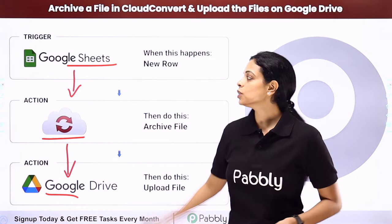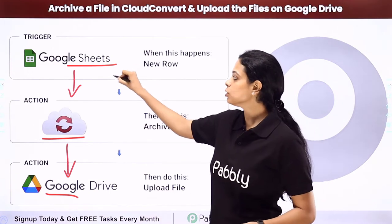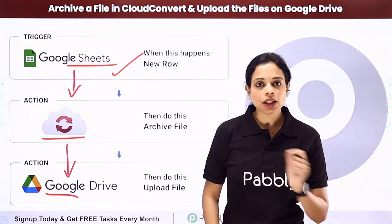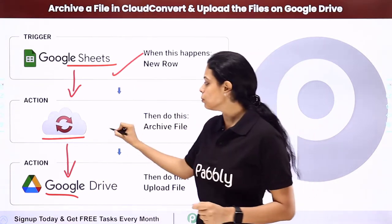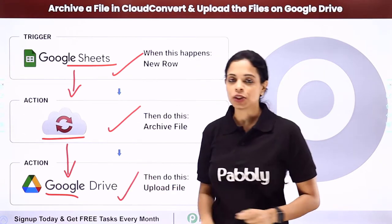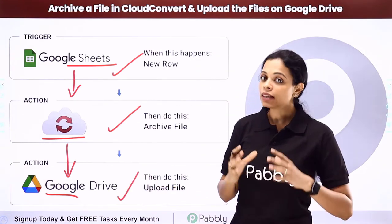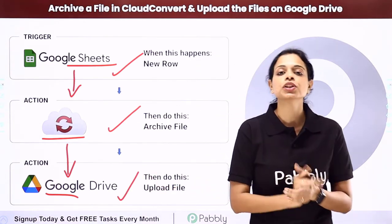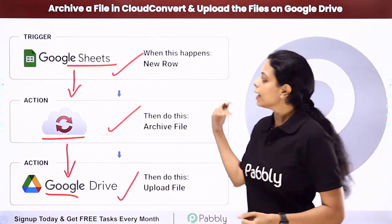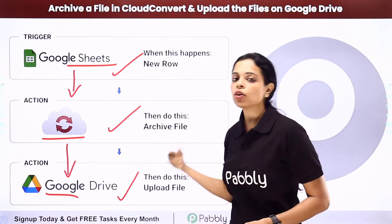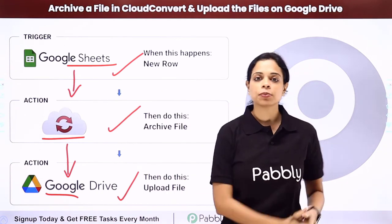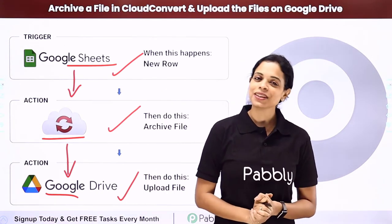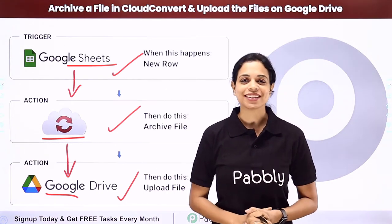Your trigger application would be Google Sheets and your action applications would be Cloud Convert and Google Drive. How can you integrate and automate this entire process yourself? To understand that, let me take you to my screen.